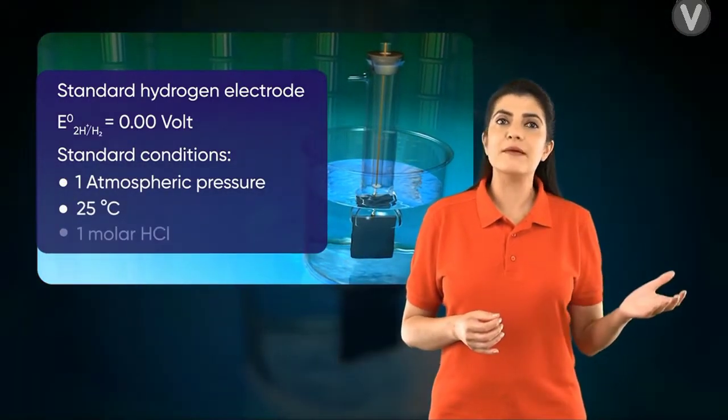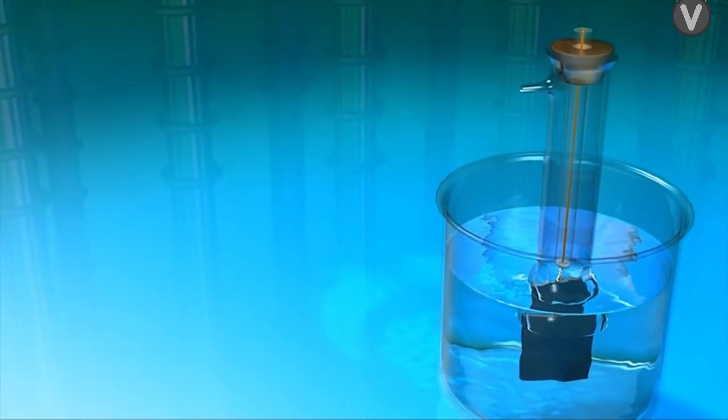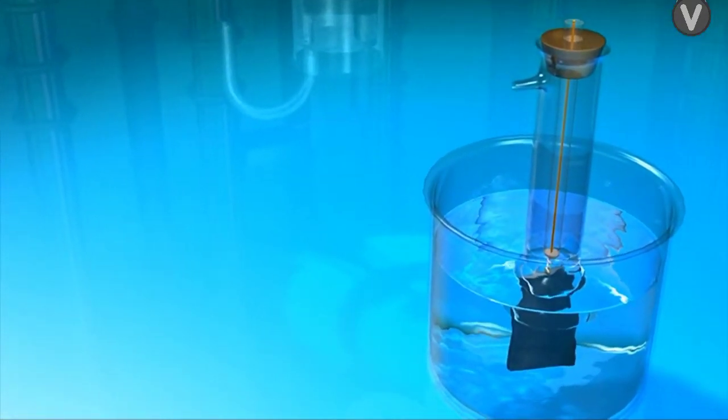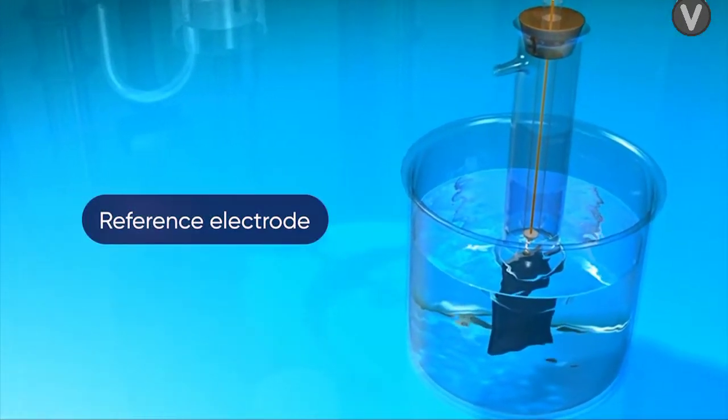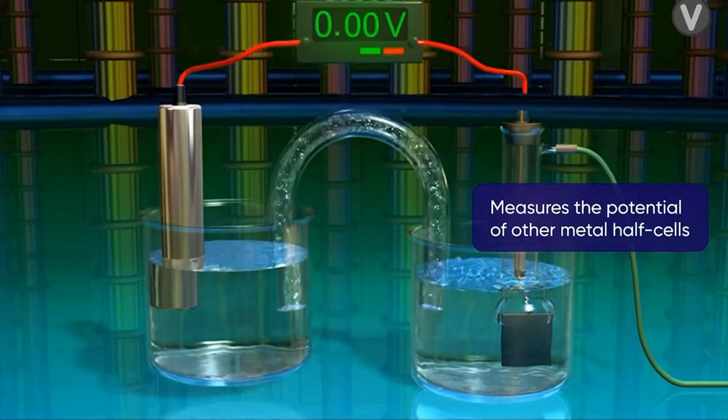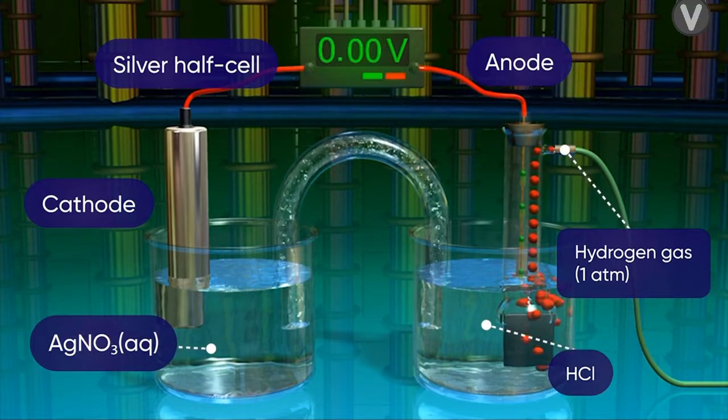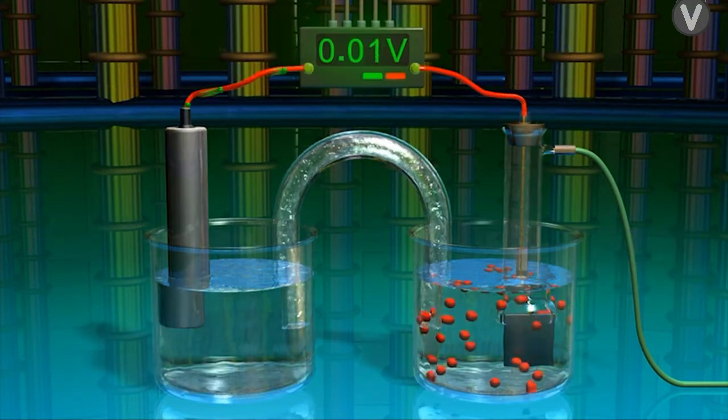The standard hydrogen electrode acts as a reference electrode and is used to measure the potential of other metal half cells, such as a silver half cell where it acts as an anode, and a zinc half cell where it acts as a cathode.